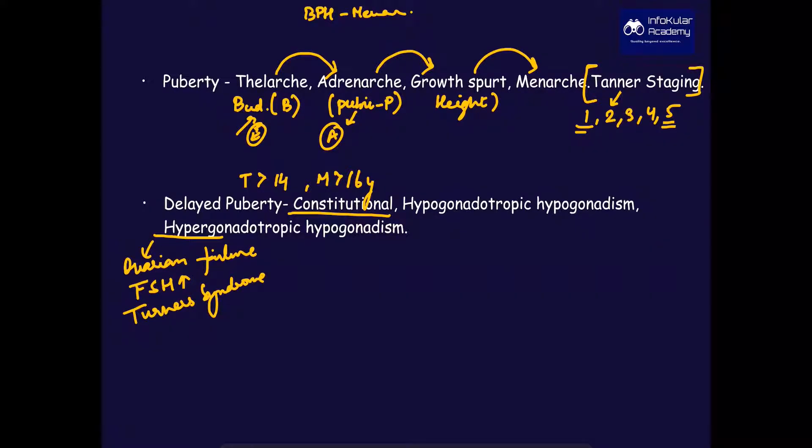Hypogonadotropic hypogonadism is seen mostly in CNS abnormalities that affect gonadotropin secretion. Also, an entity called Kallmann syndrome, which is delayed puberty plus anosmia plus colorblindness.